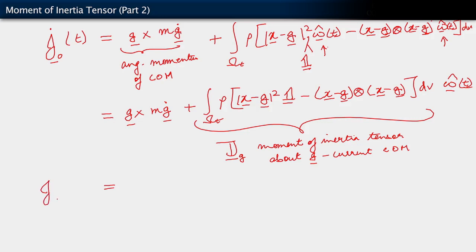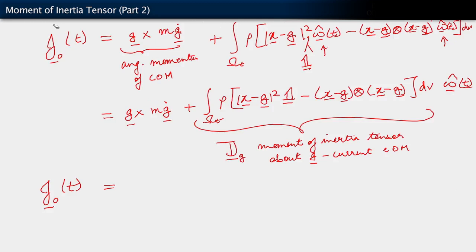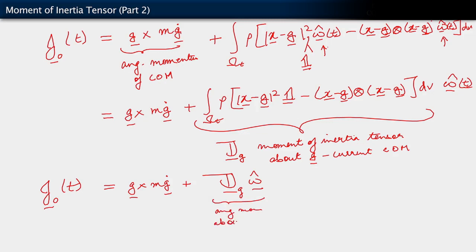Finally, we have J₀ as a function of time equals the angular momentum of the center of mass plus J_g acting on ω̂, which is the angular momentum about the center of mass — the angular momentum about g, which is the center of mass.